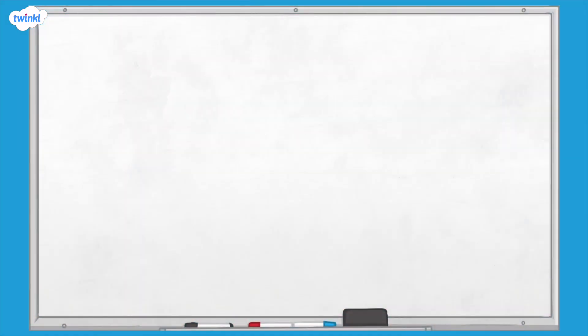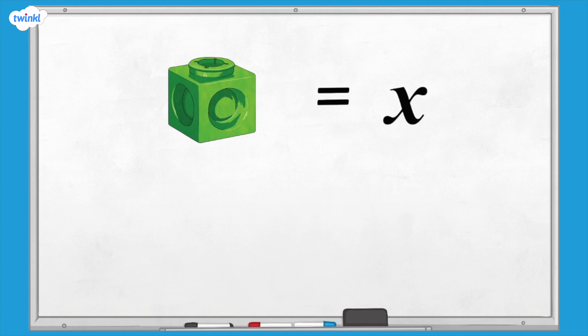In algebra we can use any letter to represent the unknown number. To begin with we're going to use x because this is a commonly used letter. We are going to use concrete materials to help us understand different expressions. We will use an interlocking cube to represent our unknown number and a base tens one cube to represent one.